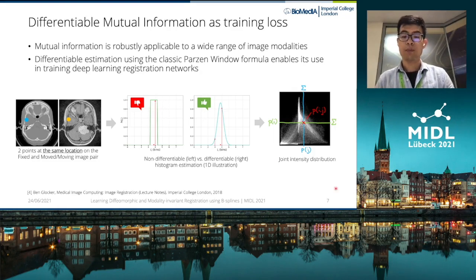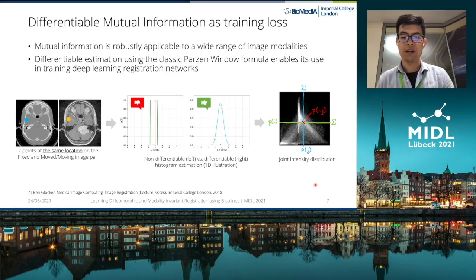To improve memory efficiency, in our experiments we only compute mutual information over a random subsample of points in the image space for each training iteration. This is actually quite useful for 3D registration.